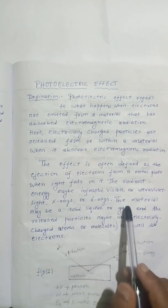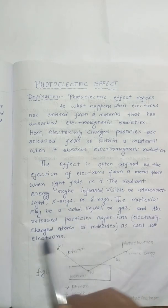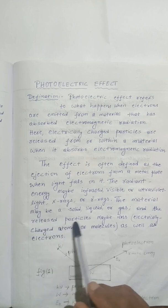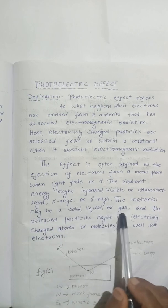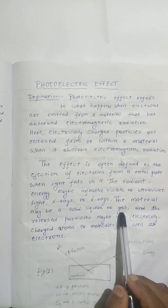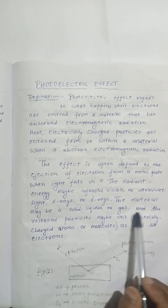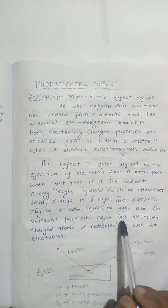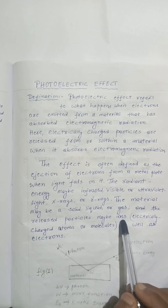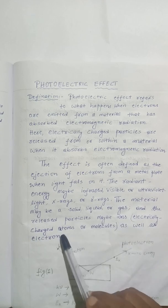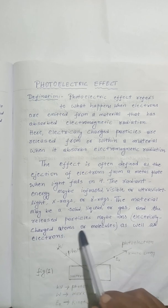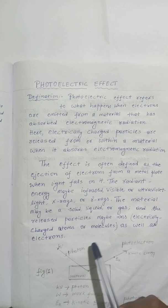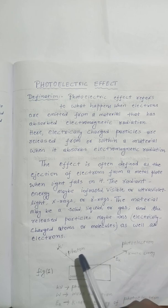The radiant energy may also be X-rays or gamma rays. The material on which the light is incident may be a solid, liquid, or gas. And the released particles may be ions, electrically charged atoms or molecules, as well as electrons.